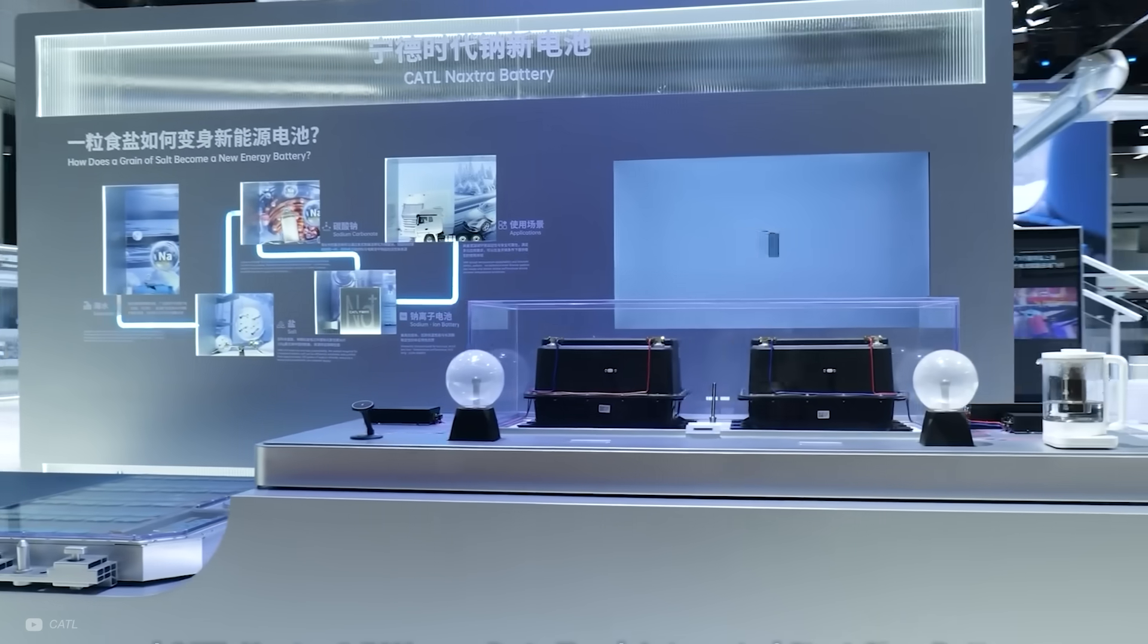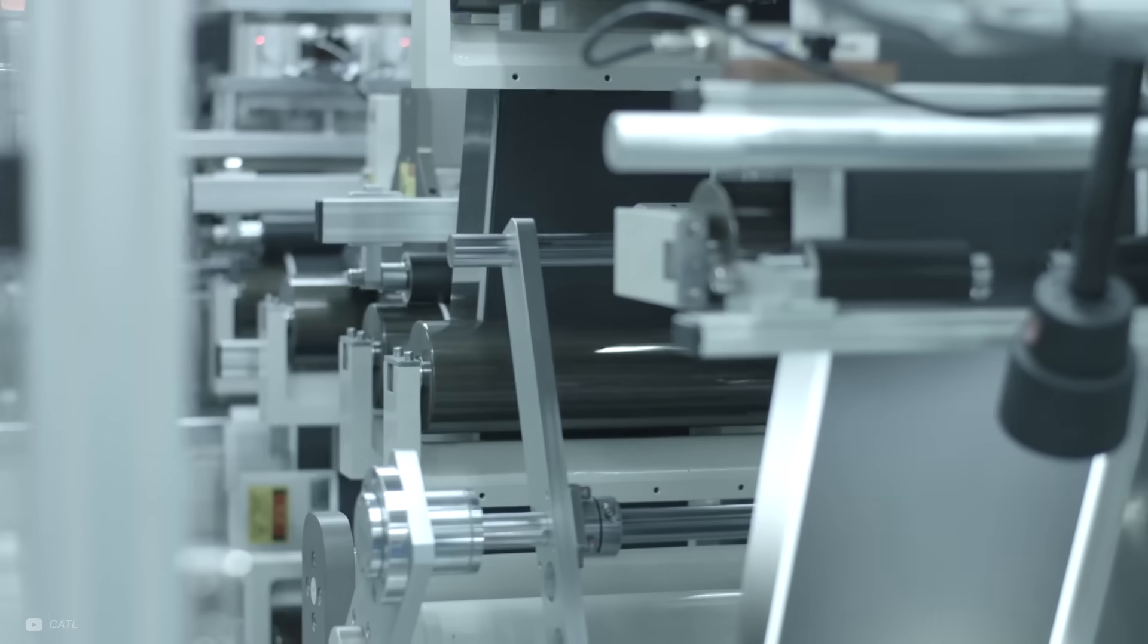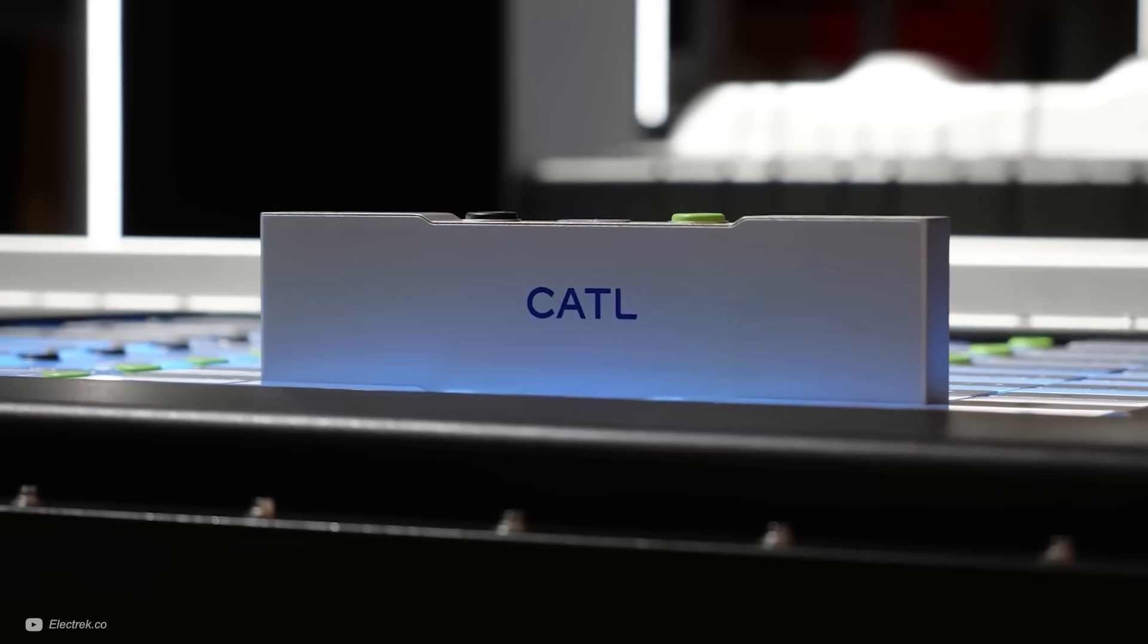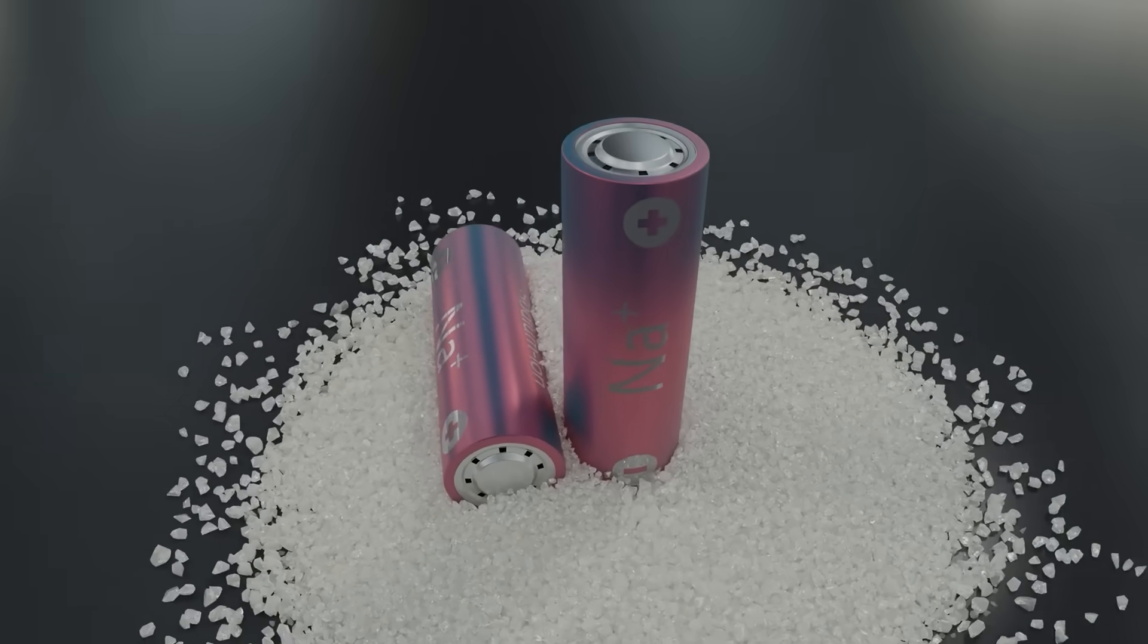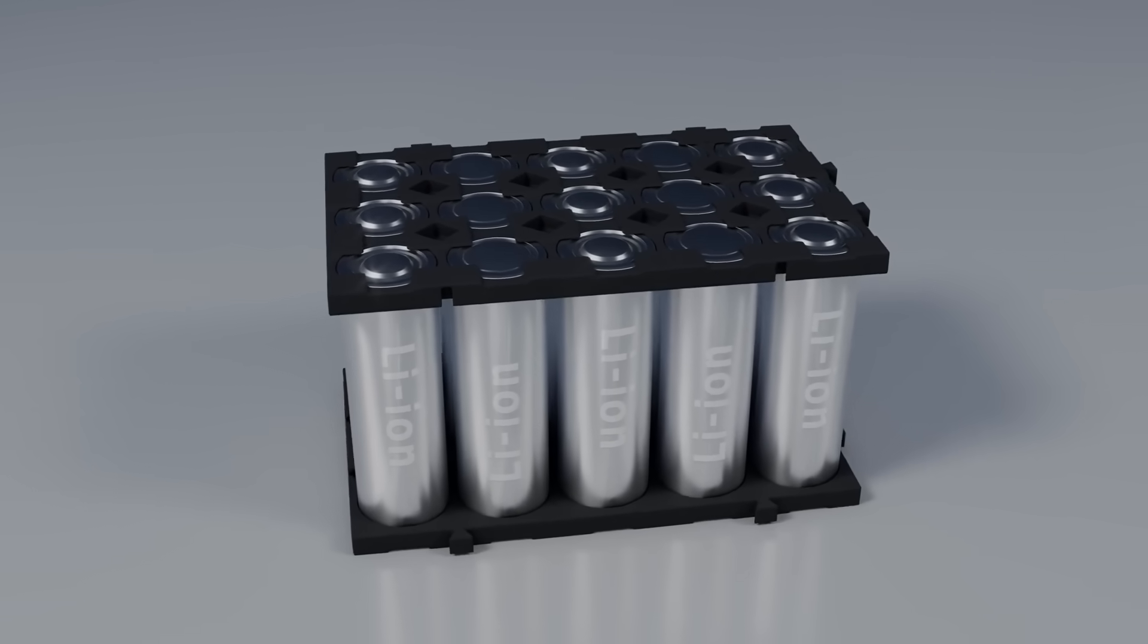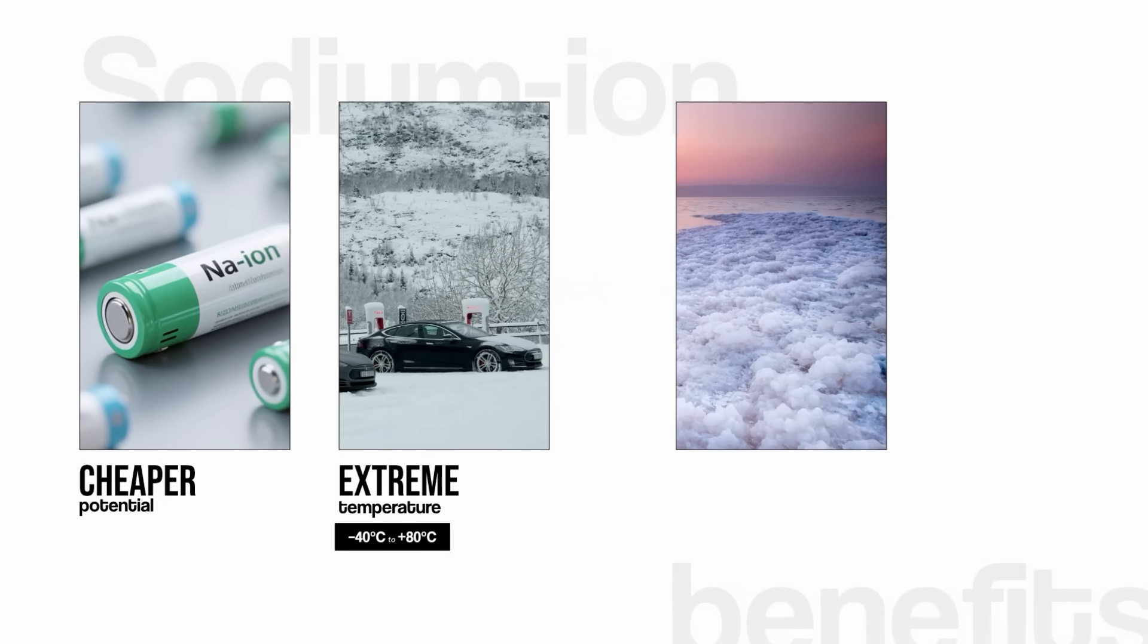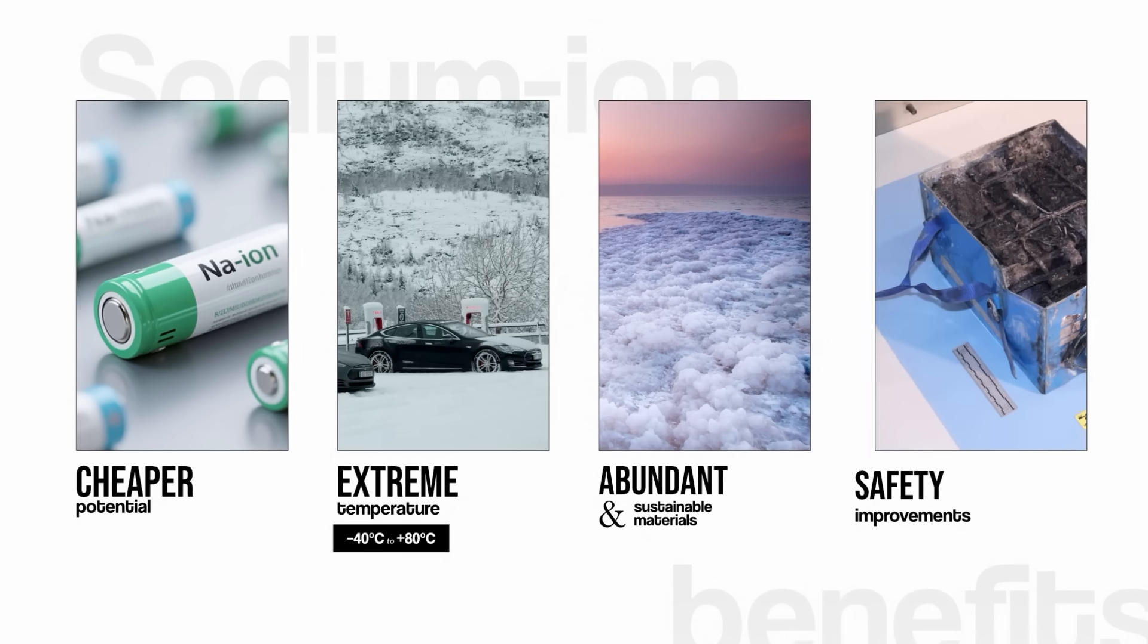The main story here is that CATL have developed a new additive which reinforces their cells and makes it possible to cheaply mass manufacture them. But there's a lot more to this, and it requires a quick recap to fully make sense. Sodium-ion batteries offer a few benefits compared to conventional lithium-ion. These include the potential to be much cheaper, operate at extreme temperatures, be made from abundant and sustainable materials, and have improved safety.